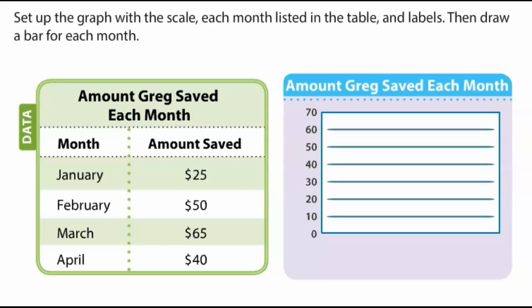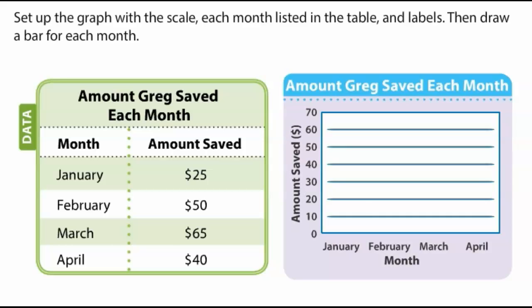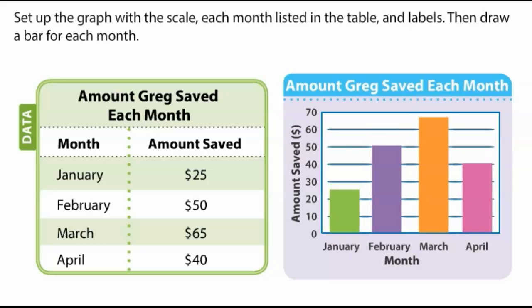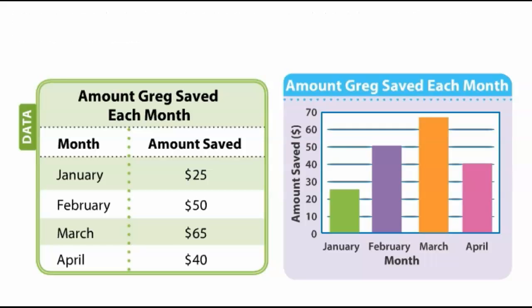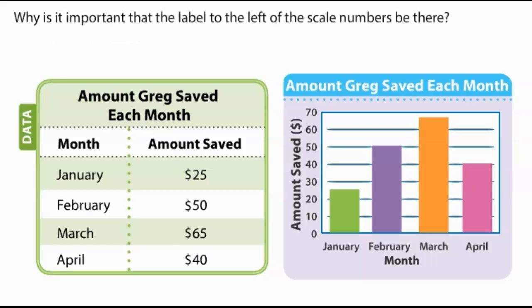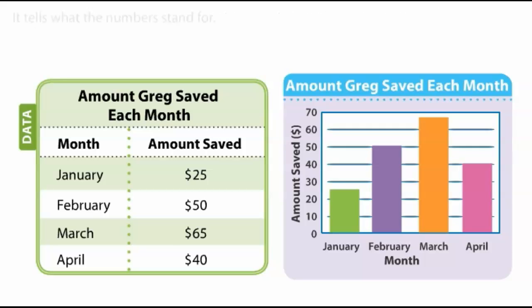Set up the graph with the scale, each month listed in the table, and labels. Then, draw a bar for each month. Why is it important that the label to the left of the scale numbers be there? It tells what the numbers stand for.